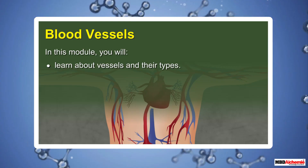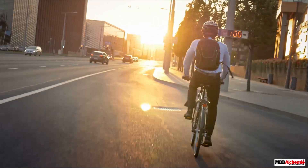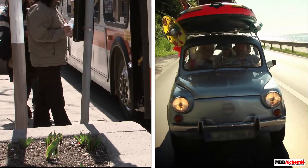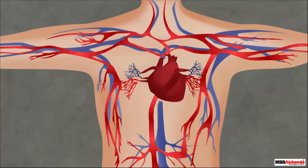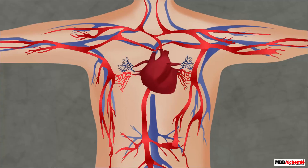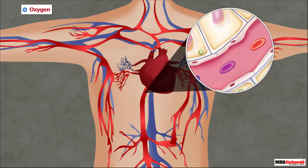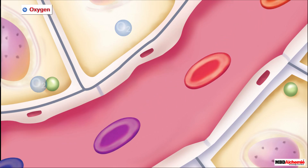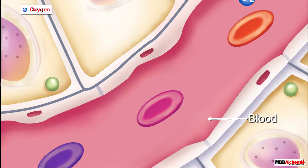In this module, you will learn about vessels and their types. We travel from one place to another, often taking a bus or a car. These buses and cars take us from one place to another by road. A similar type of transportation takes place inside our body too — many different substances need to travel from one part of our body to another. A special vehicle inside the body helps these substances move, and that vehicle is the blood.